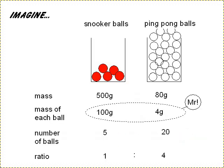So an analogy here might be to think about, I've got some snooker balls which are heavy, I've got some ping pong balls which are light, and I've got a mass of 500 grams of the snooker balls present, I need to take into account the mass of each ball.